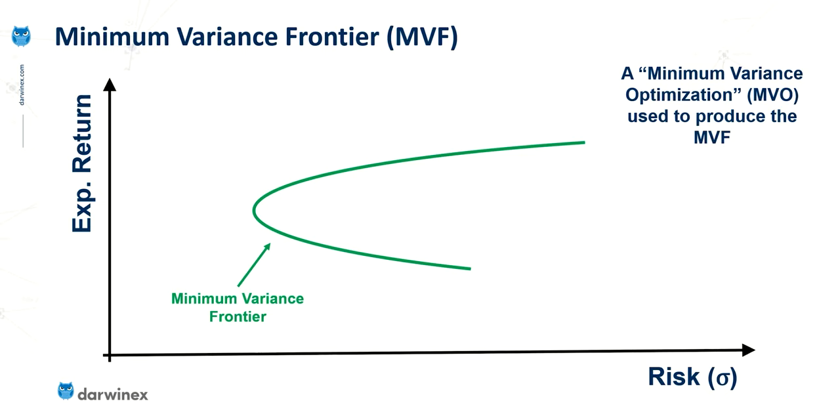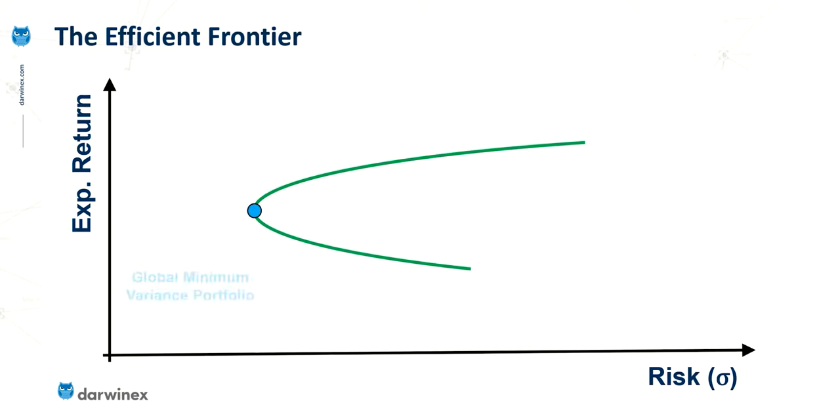We have our chart of risk versus expected return, and the minimum variance optimization, or MVO, is actually a process or a technique that is used in order to calculate what's known as the minimum variance frontier, that we can see in green here. The points that lie on this green curve represent the various combinations of risk and expected return that can be achieved using different allocations for the assets in the portfolio. The point here on the curve that exhibits the minimum amount of risk is what's commonly known as the global minimum variance portfolio.